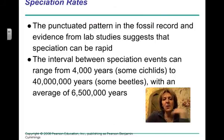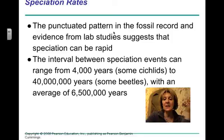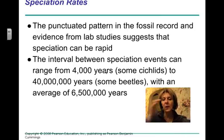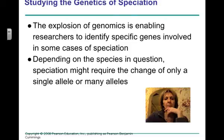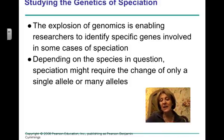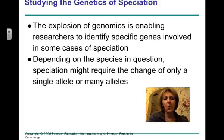The punctuated pattern in the fossil record suggests that speciation can be rapid — anywhere from 4,000 years as we see with some cichlid fish to a much longer timescale with beetles and other organisms — but with an average of about 6 to 6.5 million years. The study of genomics and proteomics is helping this area explode, allowing researchers to look at the genes and actual molecular changes in two different organisms, and that is definitely changing what we know of speciation.